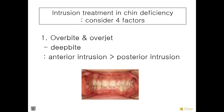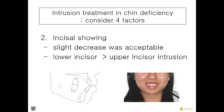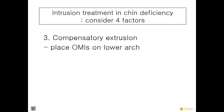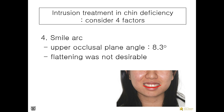Let's see the four related factors for this patient. Because of deep overbite, anterior intrusion should be much greater than posterior intrusion. Incisor show was excessive a little during smile, so a greater amount of lower incisor intrusion was needed. To prevent compensatory extrusion, orthodontic mini implants were placed in the lower arch. Smile arc was not excessive, so flattening of the smile arc should be minimized.